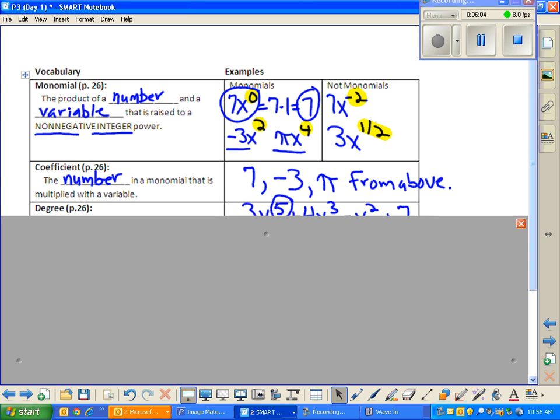All right. Next word. Coefficient. So if you look at 7x to the zero-th power, negative 3x squared, and pi x to the fourth from the previous example, 7, negative 3, and pi are coefficients. They're basically the number in a monomial that is multiplied by the variable. From right here. From heaven.